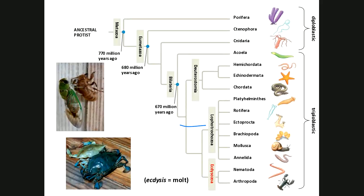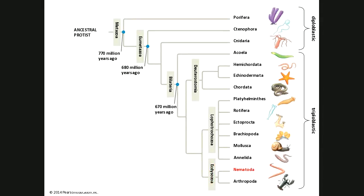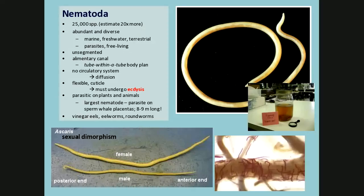Two members of this group — the roundworms and the more familiar insects. The group Nematoda — I always remember that nematodes were the roundworms because there's an 'O' in the word. About 25,000 or so species, possibly 20,000 more. They're called eel worms or roundworms. The roundworm you'll dissect on Monday shows sexual dimorphism — you can tell male from female because males have a hook at the end and are smaller than females.